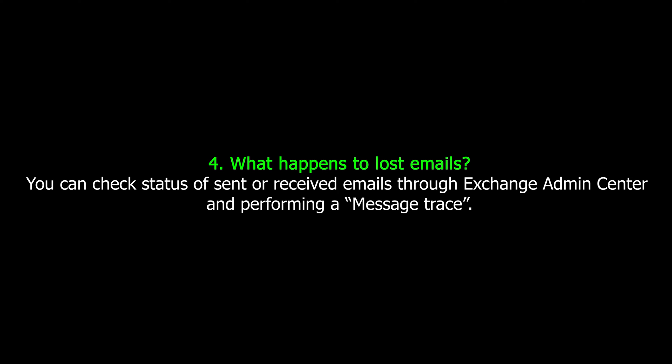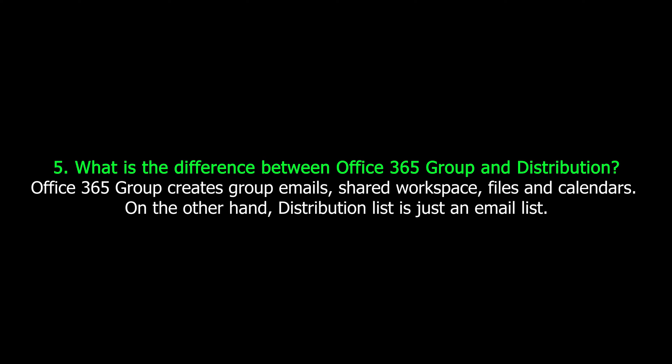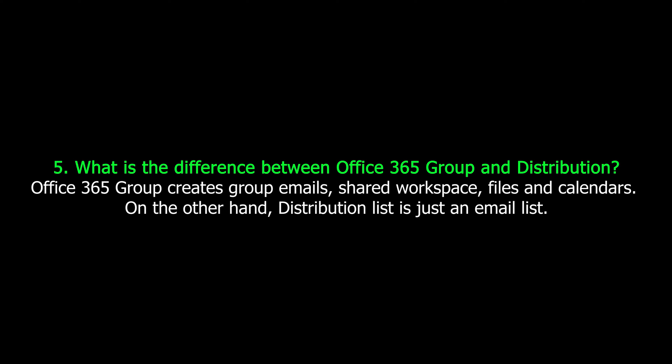Number four: what happens to lost emails? You can check the status of sent or received emails through the Exchange Admin Center by performing a message trace. Number five: what is the difference between an Office 365 Group and a Distribution List? An Office 365 Group creates emails, shared workspaces, files, and calendars. On the other hand, a Distribution List is just an email list.